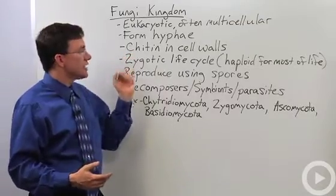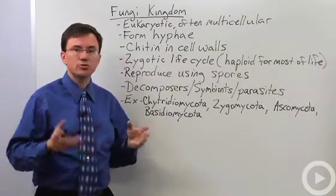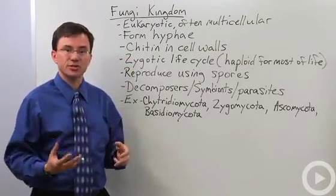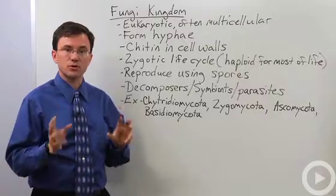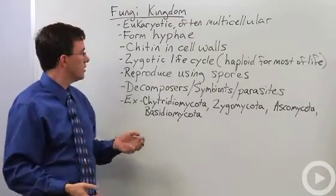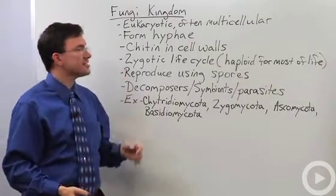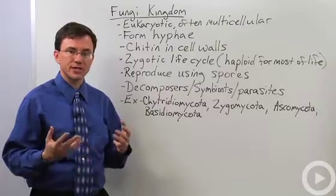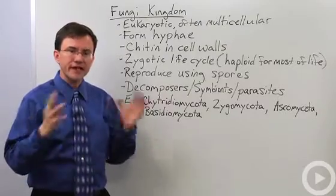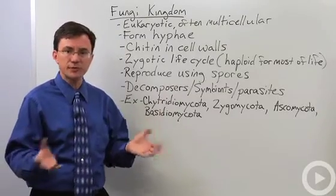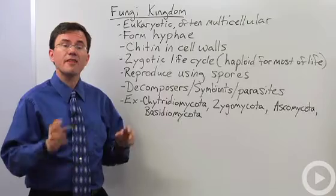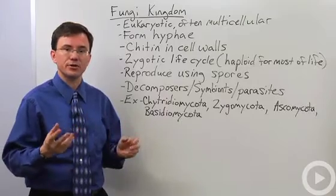They use a very unusual polysaccharide called chitin in their cell walls, and this is one of the things that makes them distinct from several other groups. They follow the zygotic life cycle, which means that for the vast majority of the time, except when they're doing reproduction, they are haploid.